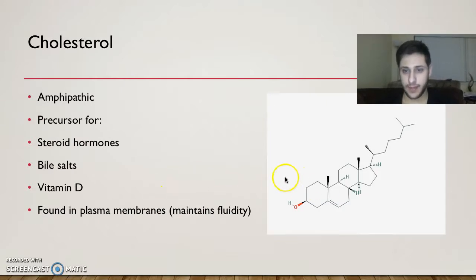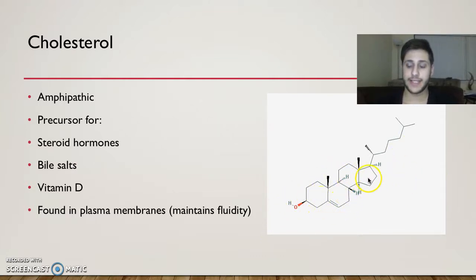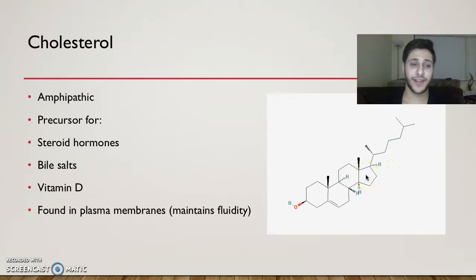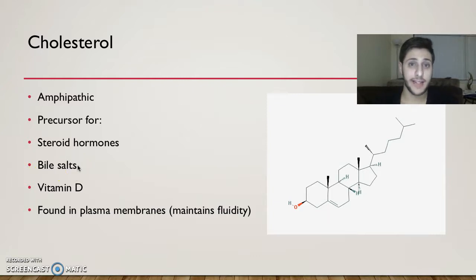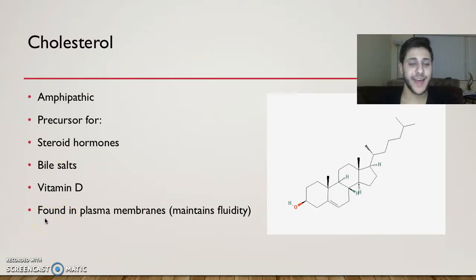Cholesterol is an amphipathic compound — it has a hydrophobic part and a hydrophilic part. Notice the hydrophobic part: we have four rings, A, B, C, and D, and a tail attached to the D-ring that increases hydrophobicity. Cholesterol is a very important compound in our body — it's a precursor for steroid hormones such as estrogen and testosterone, important for bile salts used in fat digestion and absorption in the small intestines, a precursor for vitamin D important for bone health, and found in plasma membranes to maintain their fluidity.